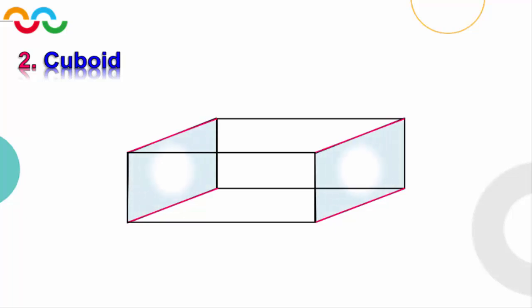Finally we draw the cuboid, and we find that it has each two opposite faces are congruent. Let's draw our third solid, which is a cylinder. A circular cylinder is a very simple solid to draw. We start by drawing an oval at the top like this. After that we draw another oval at the bottom.